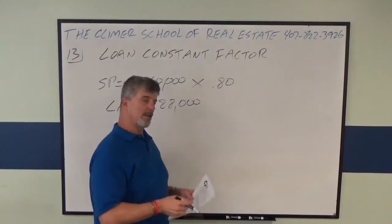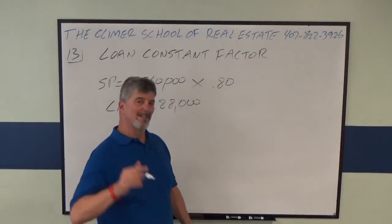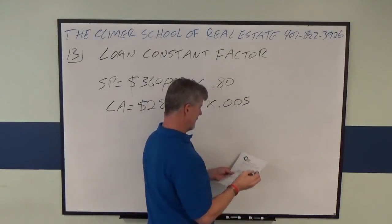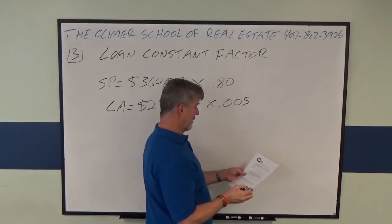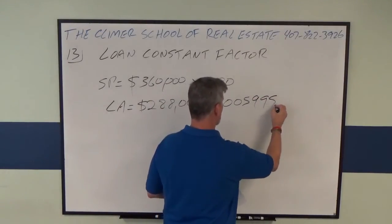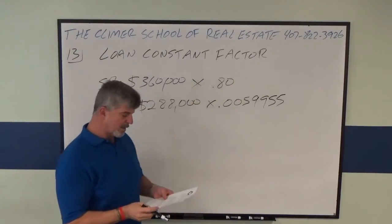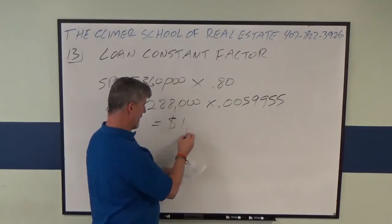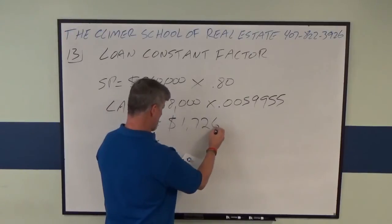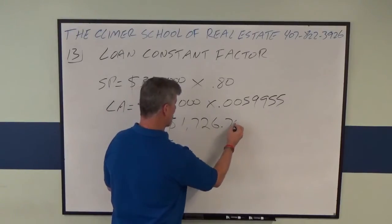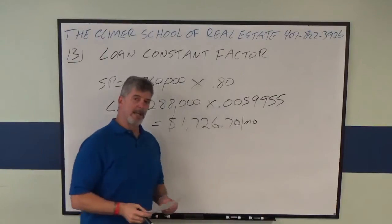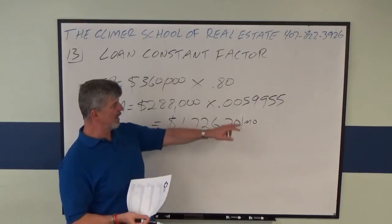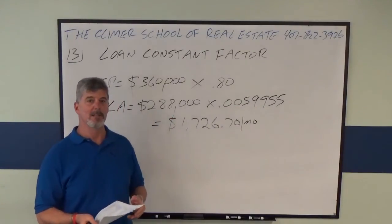So they gave us all that. We have the loan amount. You're going to multiply that by the loan constant factor that they will give you on the test. In this case, it is .0059955. If you multiply those together, what you get is a monthly principal and interest of $1,726.70 a month. If you want to know the monthly payment for any loan amount at 30 years and 6%, you just multiply it by that number. That's why it's a loan constant factor.